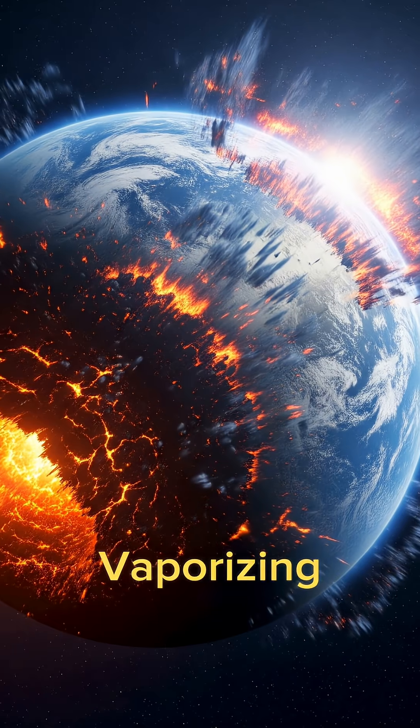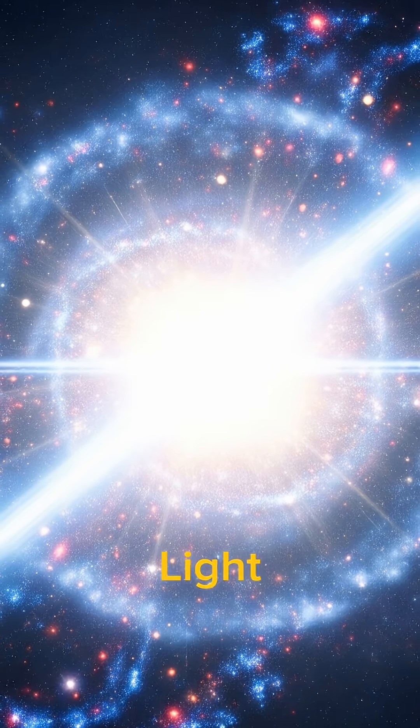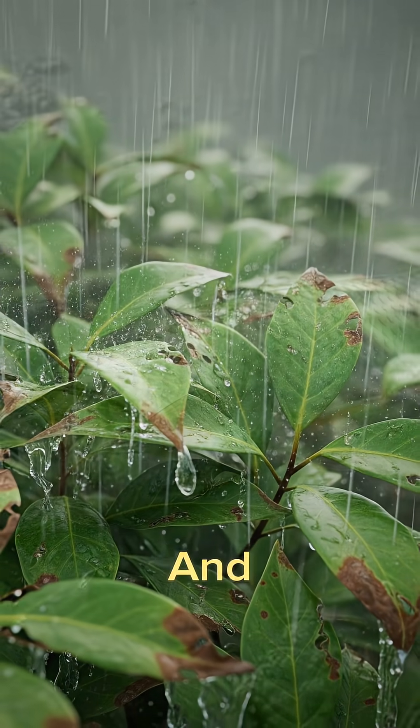Now a planet vaporizing scenario is unlikely, but a GRB aimed directly at Earth from a few hundred light years away could strip the ozone layer leading to atmospheric changes such as global cooling, acid rains, and mass extinction.